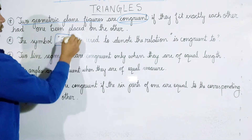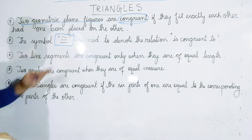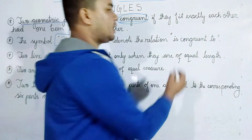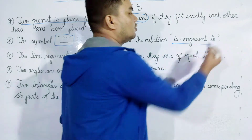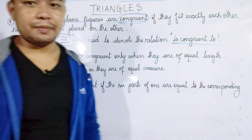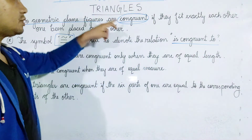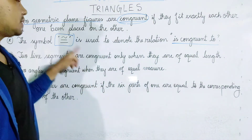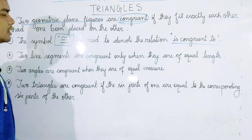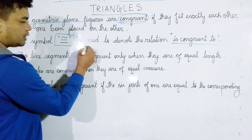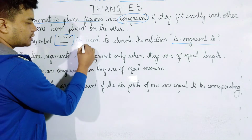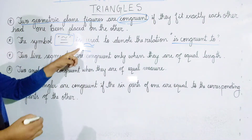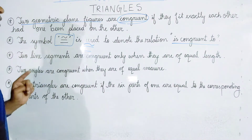The symbol for congruence is the congruence sign, which combines the similarity sign and the equals sign.